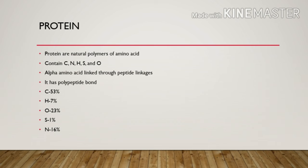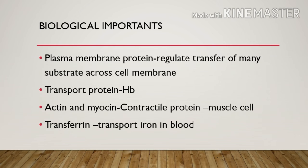Protein contains carbon, nitrogen, sulfur, oxygen, and hydrogen. Alpha amino acids are linked by peptide linkage, forming a polypeptide bond. When you think about protein, think about peptide linkage and polypeptide bonds.